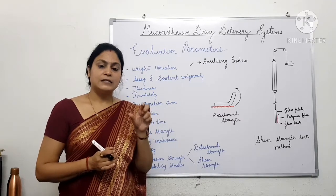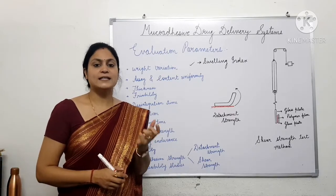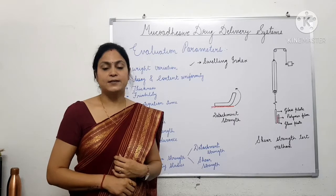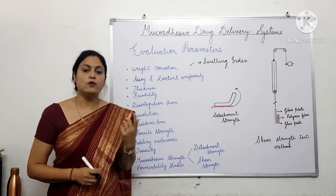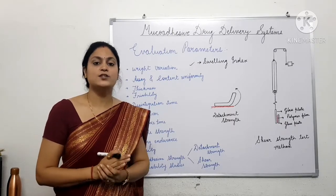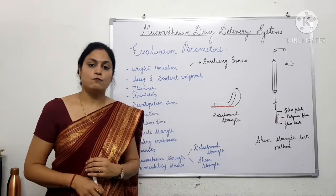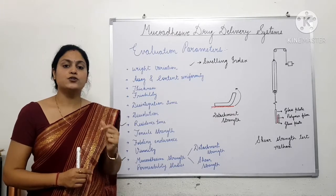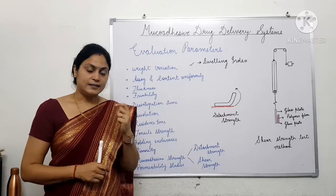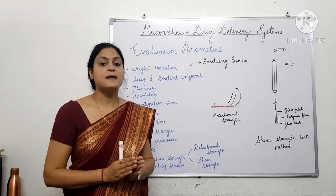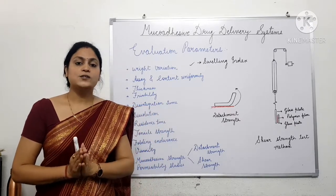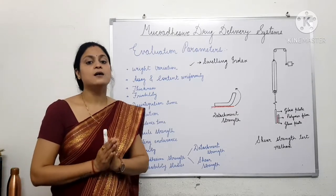Then on that mucous membrane, the muco-adhesive drug delivery device is adhered onto the mucous membrane, which was initially mounted on a glass slide at an angle of 30 degrees. The medium — it may be phosphate buffer 6.8 — is made to pour over the glass slide, over the dosage form, the muco-adhesive device which is adhered over the glass slide. This medium, any dissolution medium, is made to fall dropwise on this dosage form. The time up to which the dosage form remains adhered onto the slide is noted down.